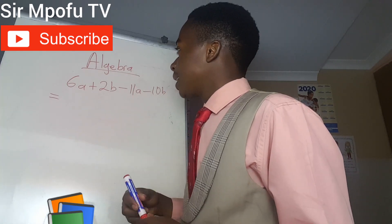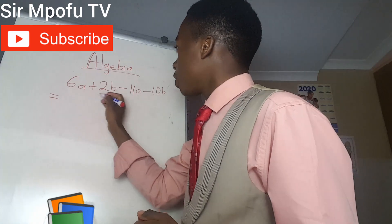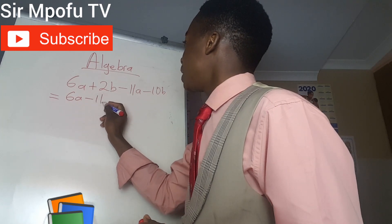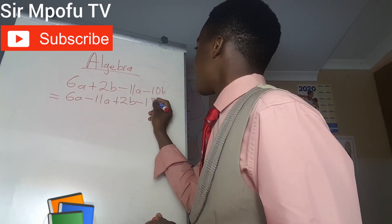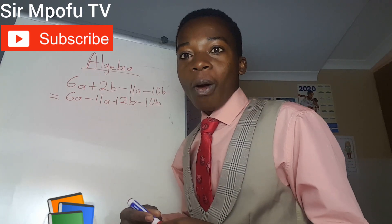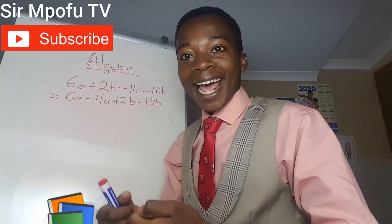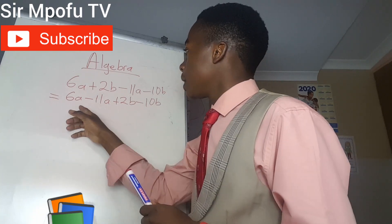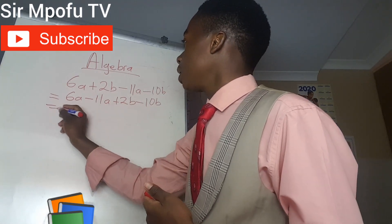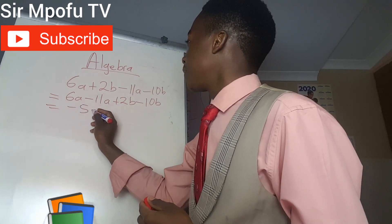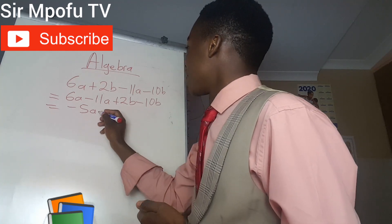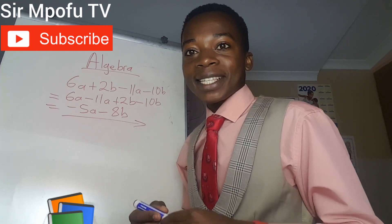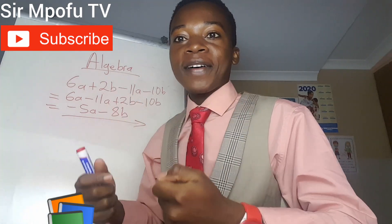We cannot simplify these directly, so we have to collect like terms. It's going to be 6a minus 11a plus 2b minus 10b. Now let's simplify: 6a minus 11a gives us minus 5a, and 2b minus 10b gives us minus 8b. This will be our final answer. As you can see, there are no more like terms, so we are not going to simplify further.